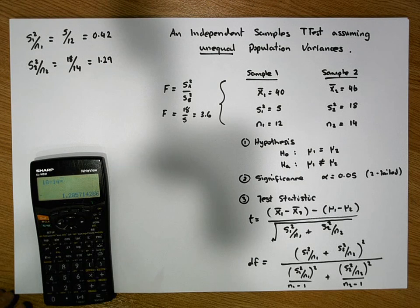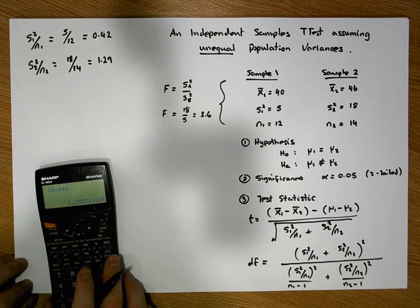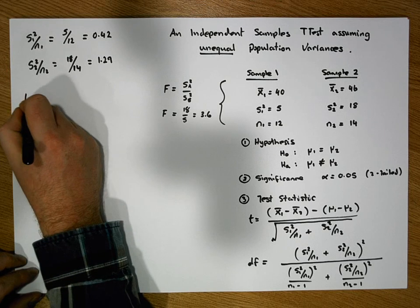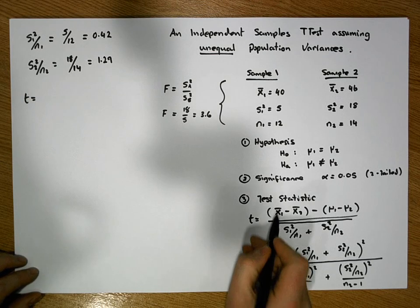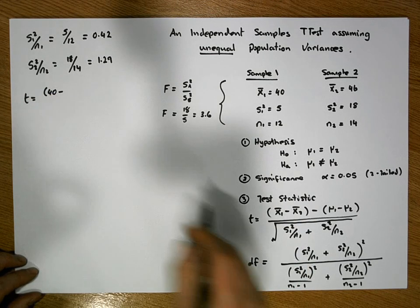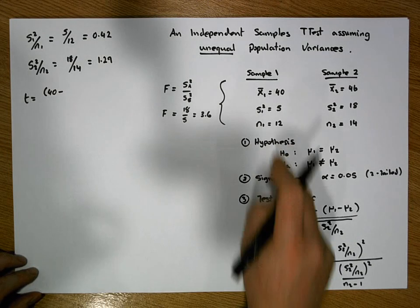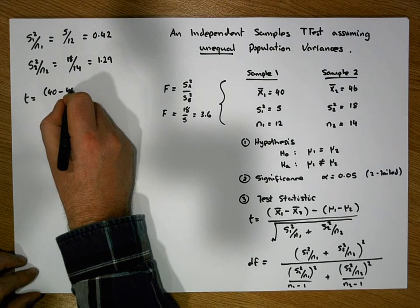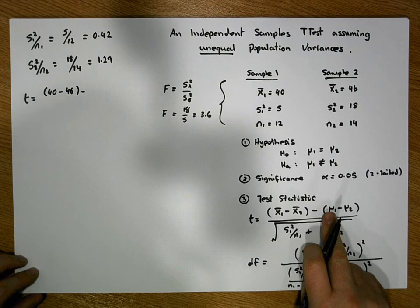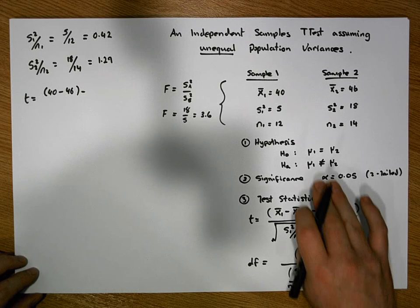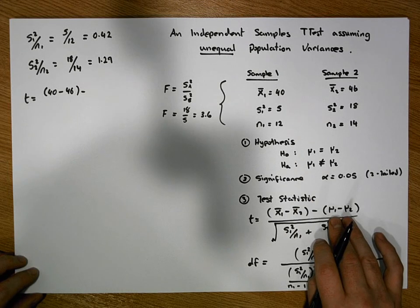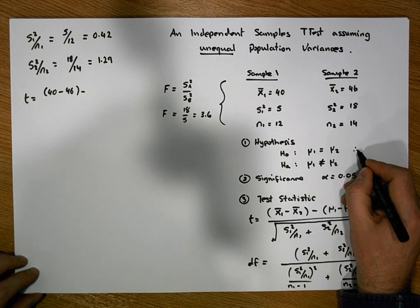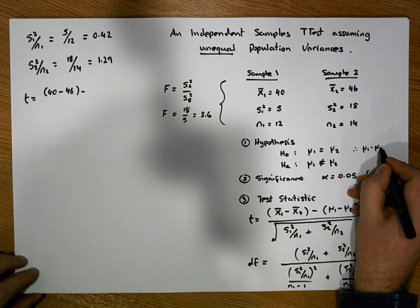Now we can calculate the test statistic. T equals x1-bar (which is 40) minus x2-bar (which is 46), minus (mu1 minus mu2). Under the null hypothesis, mu1 equals mu2, so mu1 minus mu2 equals zero.